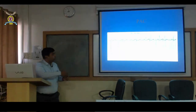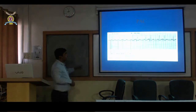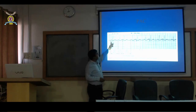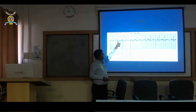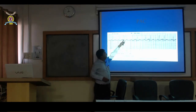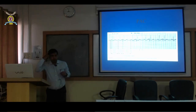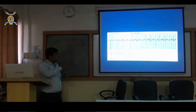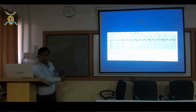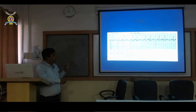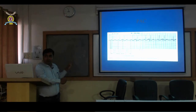Looking at P wave morphology on the ECG: if you see that one P wave is different — for example, a tall peaked P wave — while the others are normal, that P wave is not coming from the normal sinus node. It is coming from a different place, so this is an ectopic atrial beat.